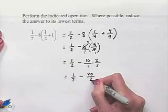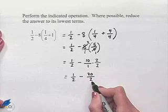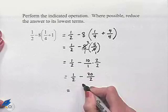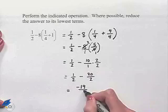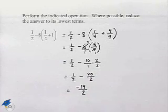Now that we have like denominators, we can subtract the numerators. 1 minus 20 is negative 19 divided by 2 as our final answer.